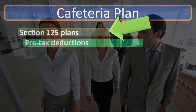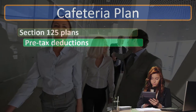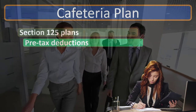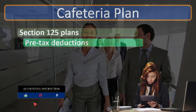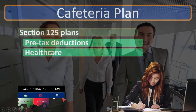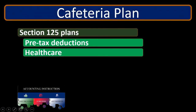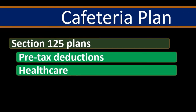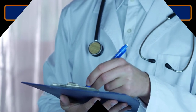Section 125 plans — Section 125 being a section of the Internal Revenue Service Code, the IRS Code. Under a Section 125 plan, we typically have plans dealing with medical expenses. These are pre-tax deductions; healthcare is typically what will be covered under Section 125 plans. The goal here is to incentivize and hopefully make medical plans or healthcare more affordable for employees.